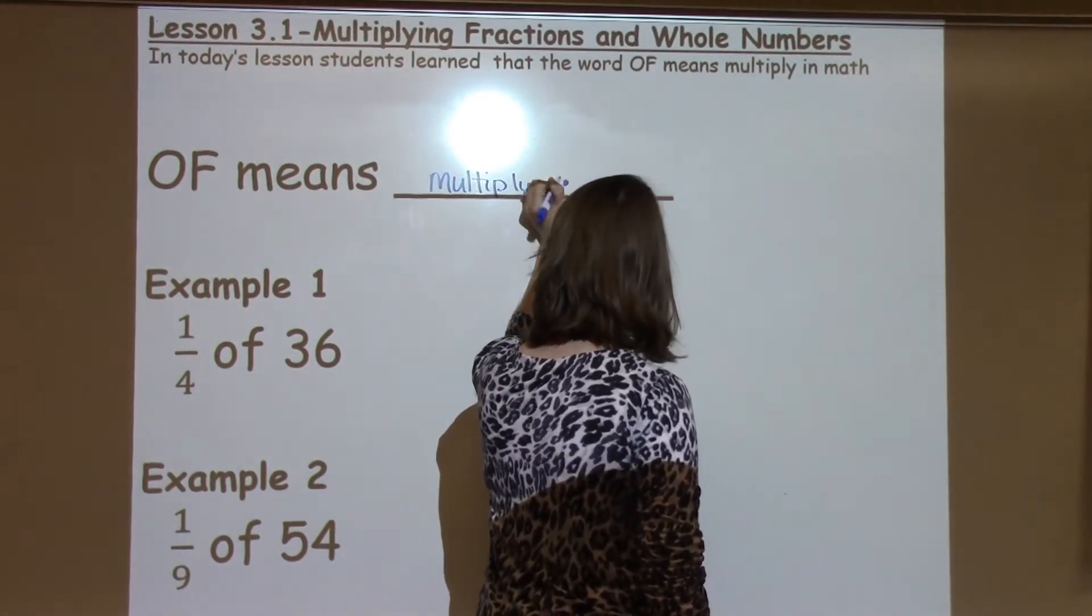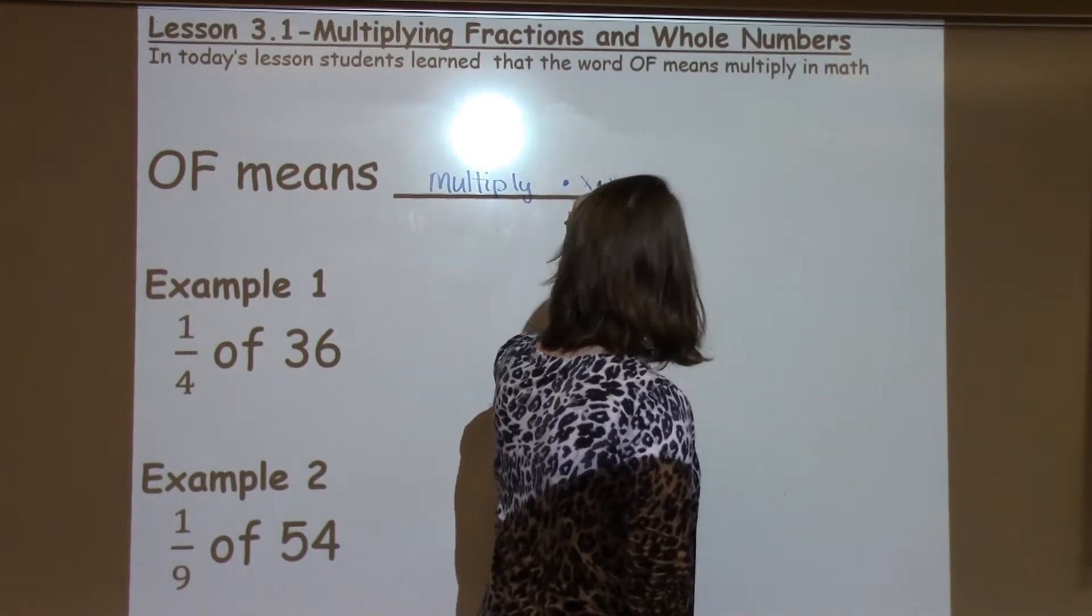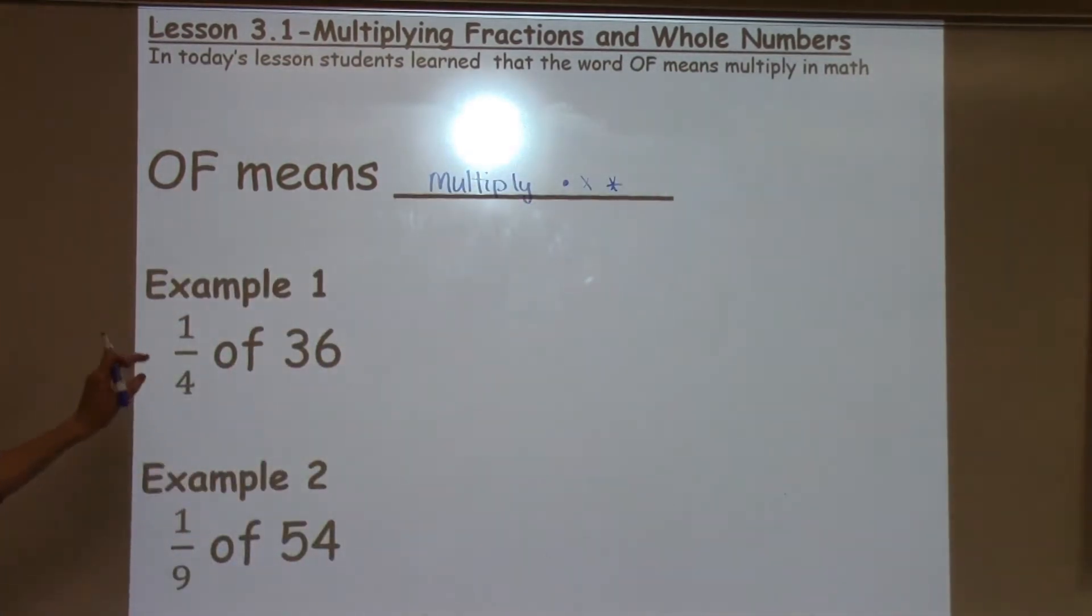Fifth graders can learn that it means a dot, an x, or sometimes an asterisk for multiplication. So, for example 1, we have 1 fourth of 36.